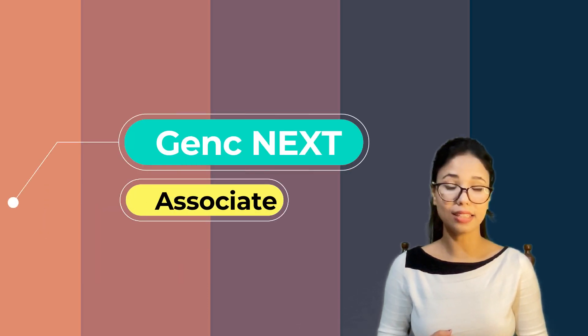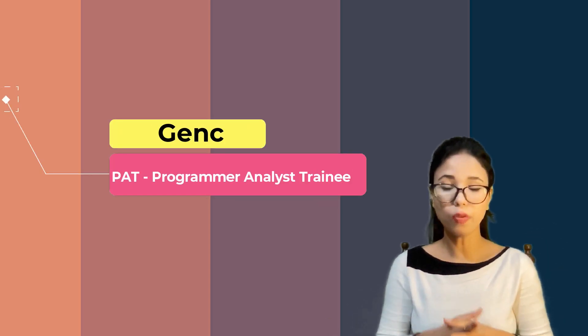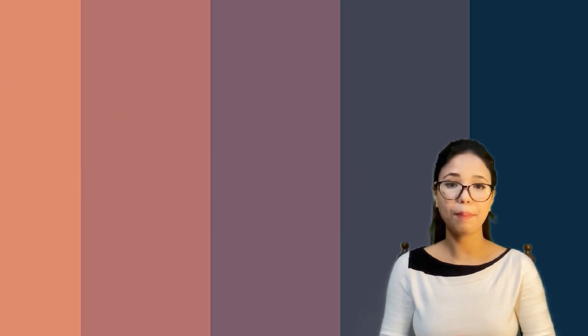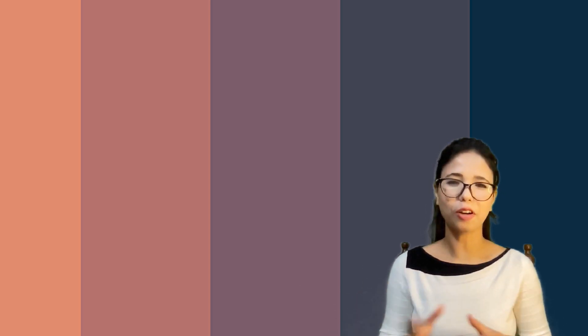One is for Gen C Next and that is Associate. Now, what is Associate? We'll discuss that. And if you're hired as Gen C or Gen C Elevate, then you will be getting the designation PAT - Program Analyst Training. Now, what is the difference between an Associate and Program Analyst Training or PA? We'll talk about that.